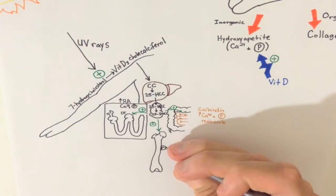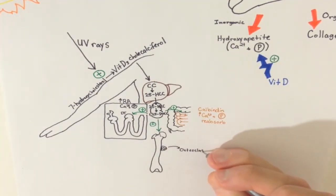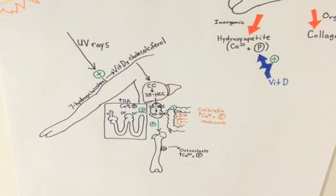Now that calcium and phosphate levels are high, they can be used for building new bone via osteoblasts. Think B for build. So what do we call this breakdown and formation? Bone remodeling.